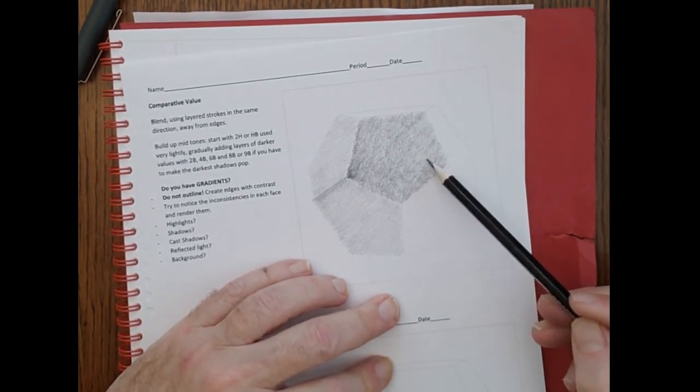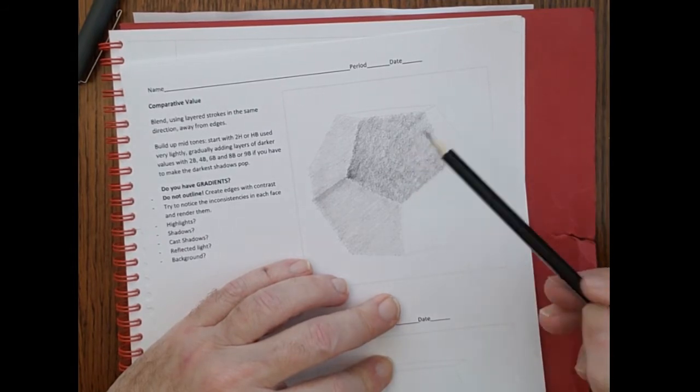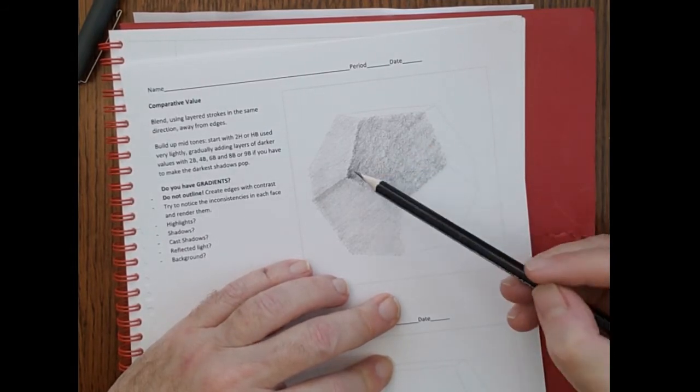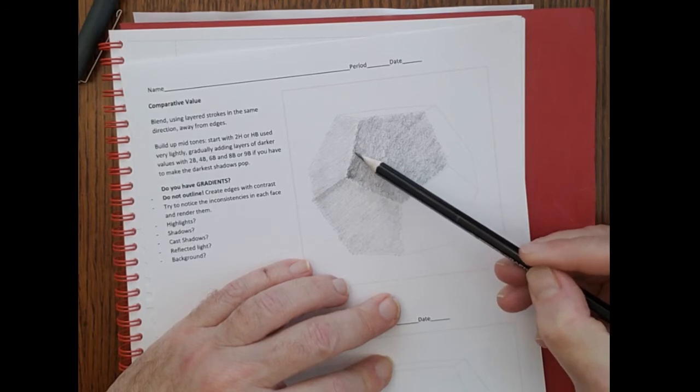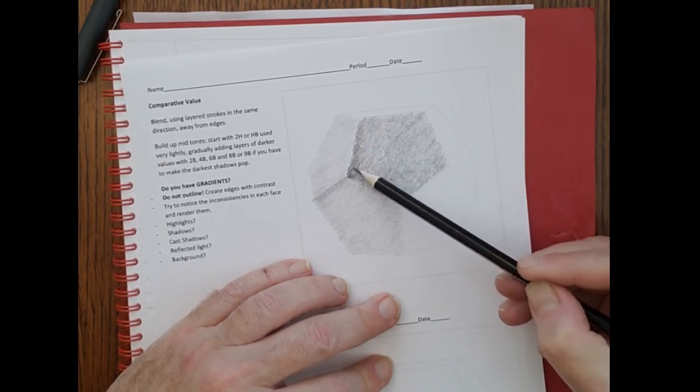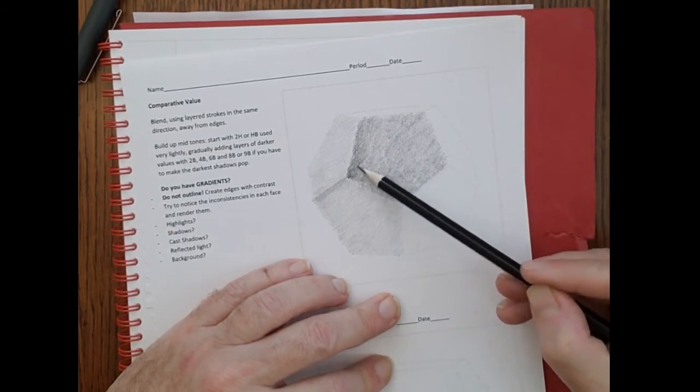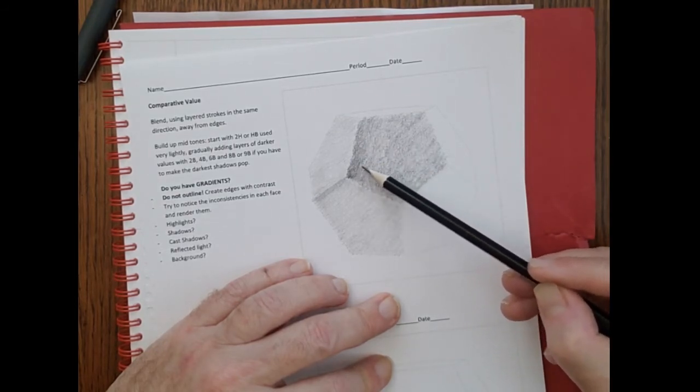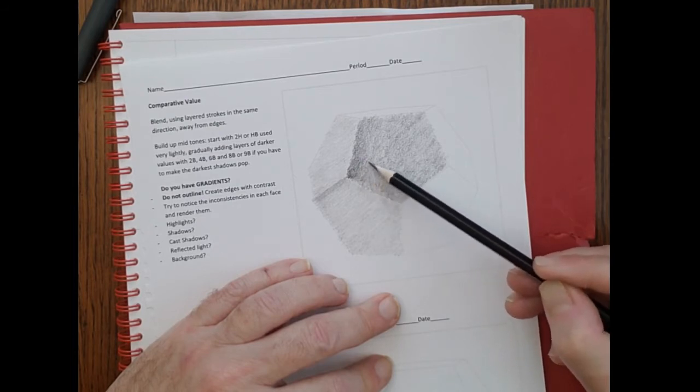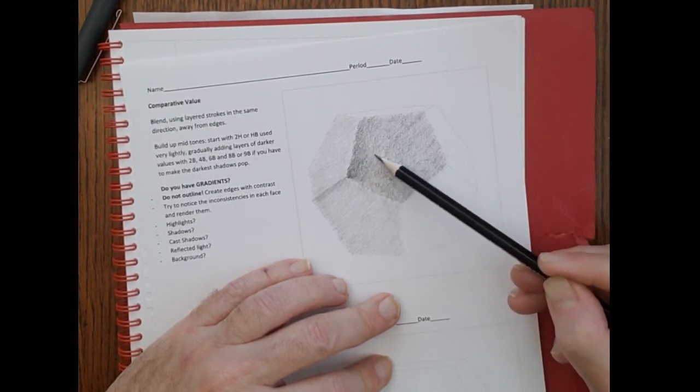So now that I've got this face mostly done, I'm going to look at it and just see. And it looks to me like I could come back in here and just build up this shadow a little bit. And again, everything should be gradual. See how there was almost like a stripe there? I'm just going to get rid of that by just blending it out.